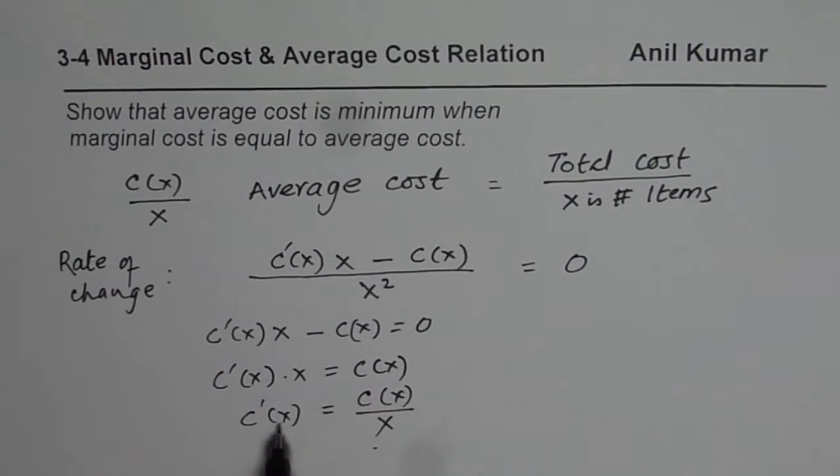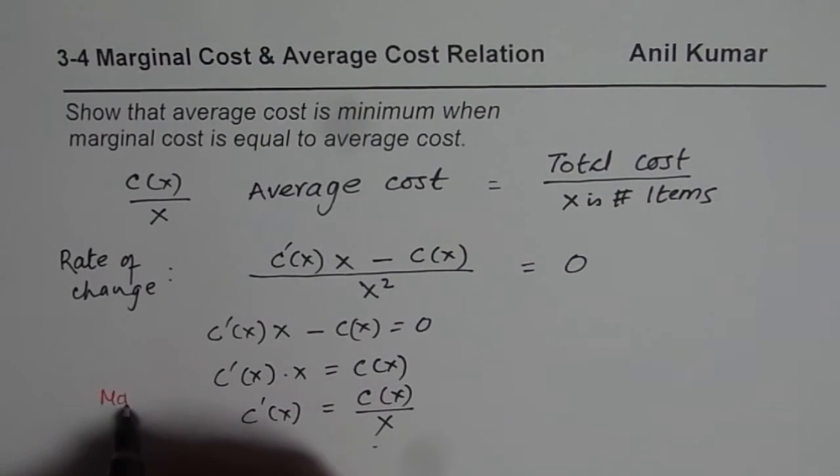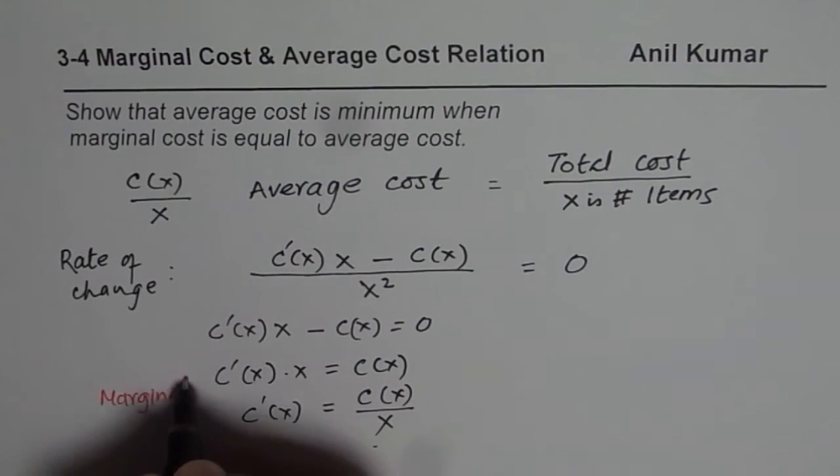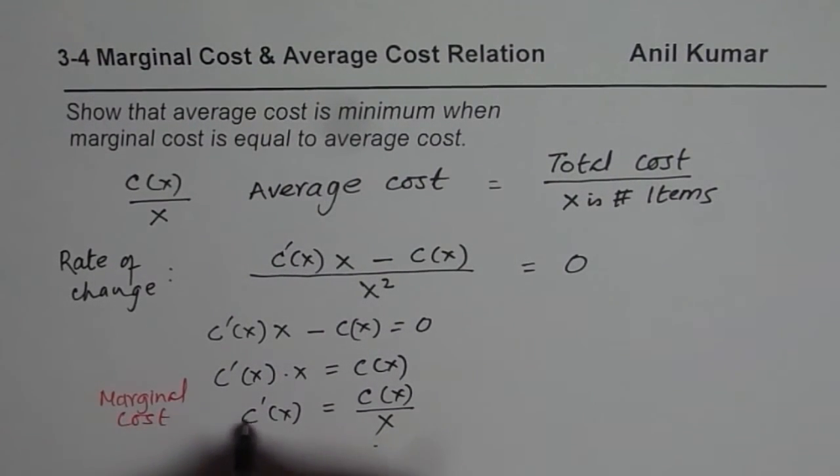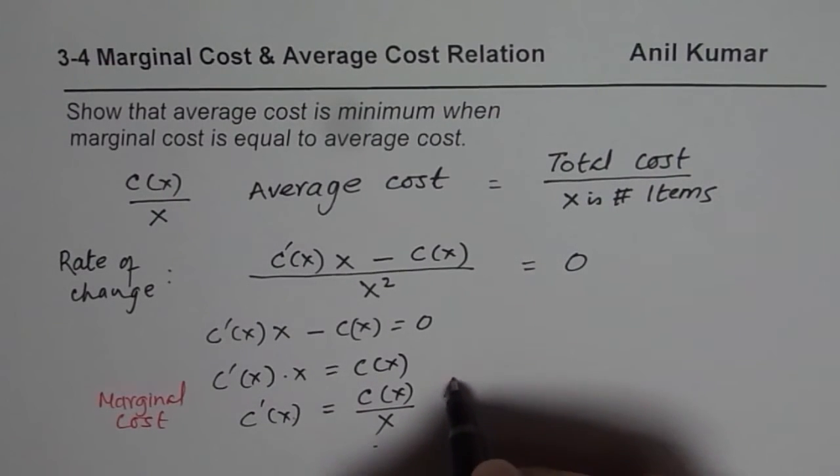So what we get here? c'(x) is the marginal cost. So that is what is called the marginal cost. So we have marginal cost here. c'(x), and this is average cost.